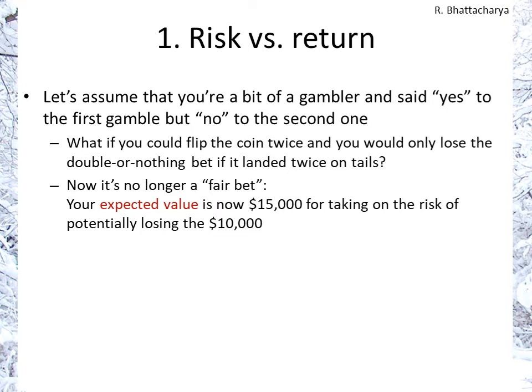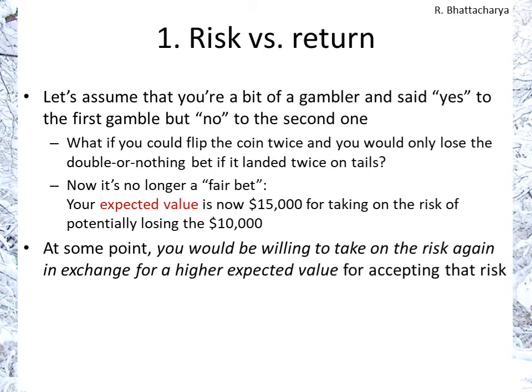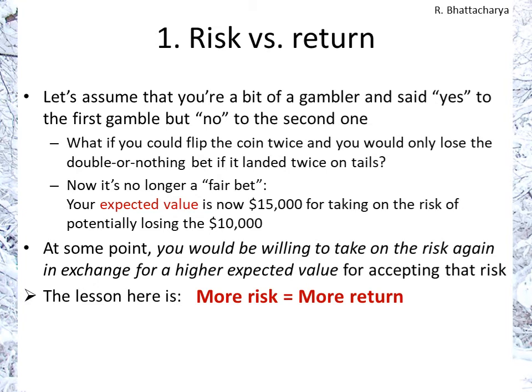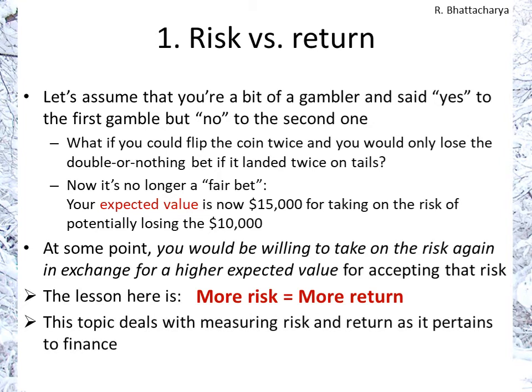It's no longer a fair bet. The probability of winning — your expected value — if you ran this bet a large number of times, you'd be winning on average $15,000, because three times you'd walk home with $20,000 and one time with nothing. Taking on the risk of gambling $10,000 with an expected value of $15,000 starts looking more attractive. This is the concept: at some point you'd be willing to take risk in exchange for a higher expected value. The lesson is — the more risk you're willing to take, you want to be compensated with a higher return.